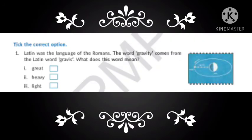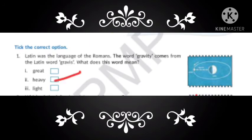Latin was the language of the Romans. The word gravity comes from the Latin word gravis. What does this mean? The word gravis means heavy. That's why due to gravity, we have different weights on Earth and Mars.